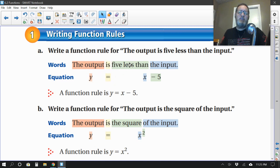5 less than. If something's 5 less than something else, that means you're supposed to subtract 5 from something. And right here, they tell us what to subtract it from, the input. So the equation ends up being y equals x minus 5.